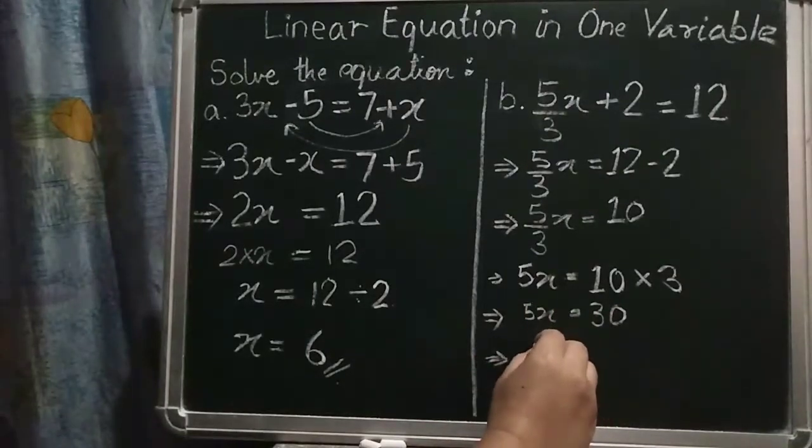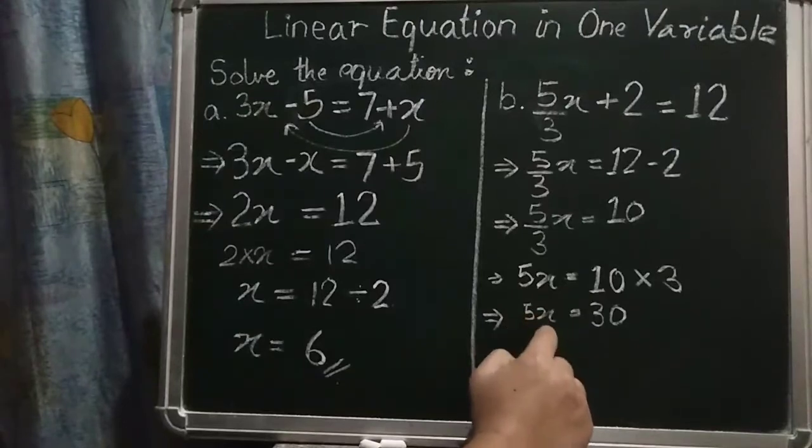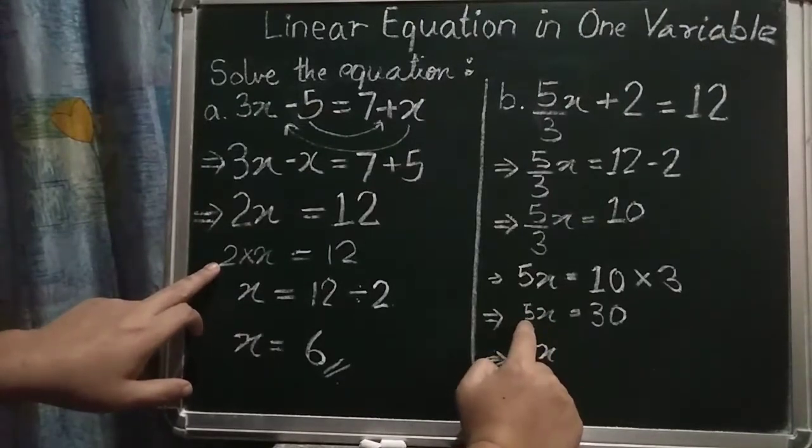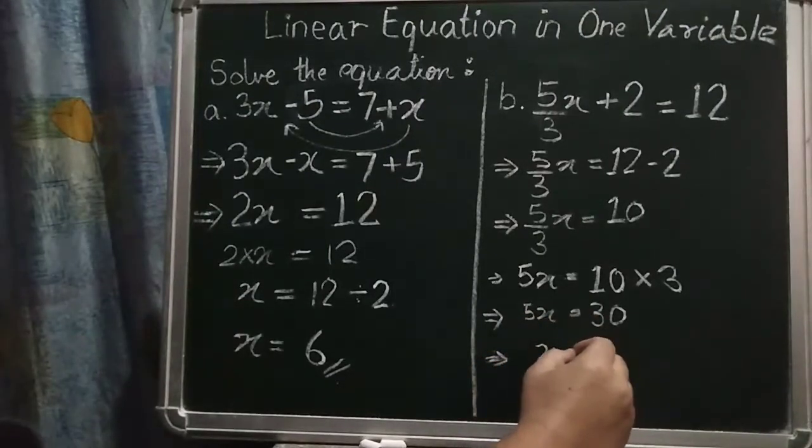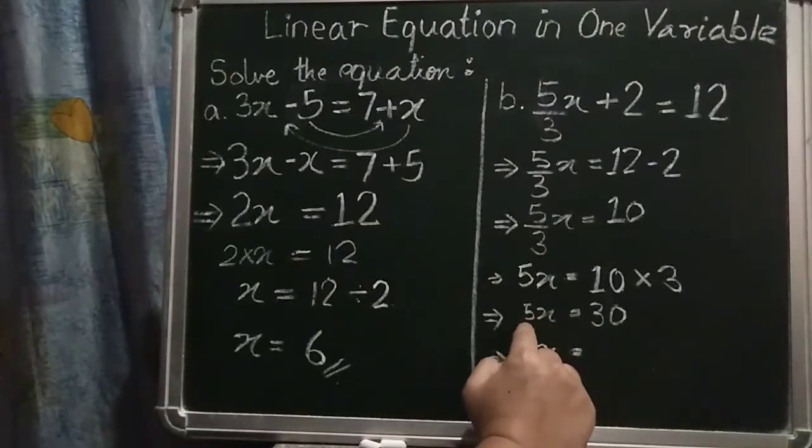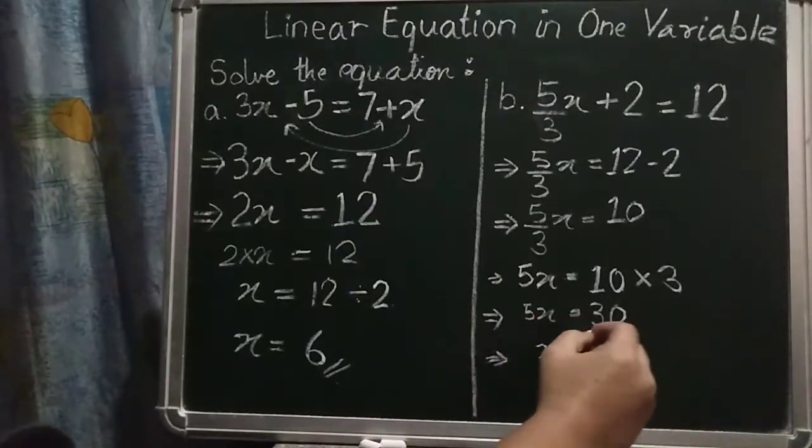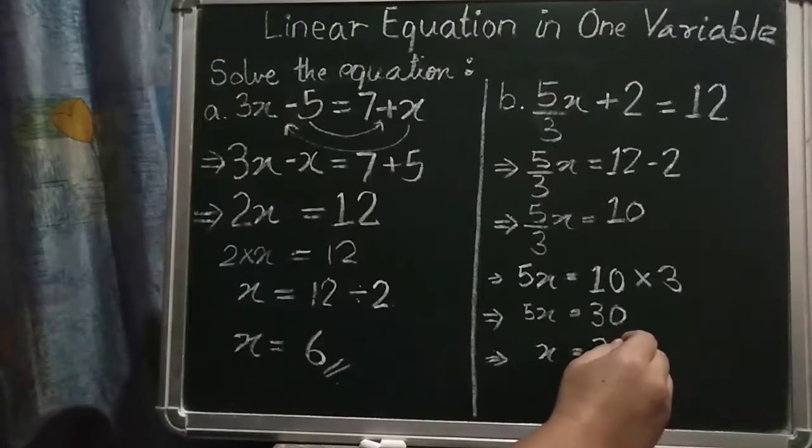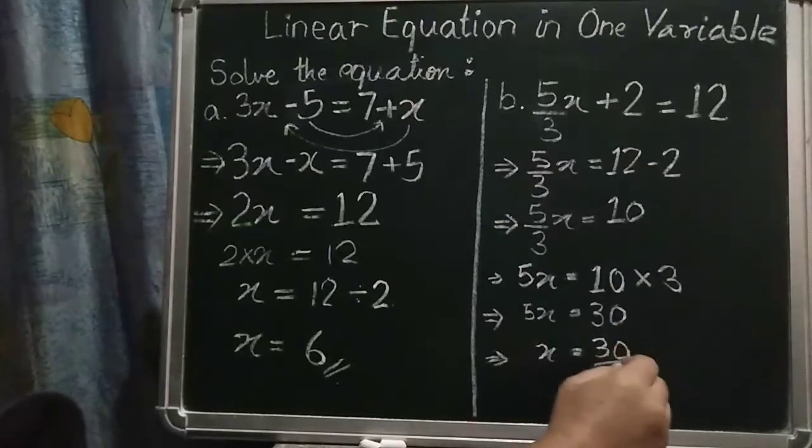So x is equal to, again, 5 into x. Same like here, 2 into x, 5 into x. So that multiply, that 5 that is getting multiplied here, it will become divide in here, 30 by 5.